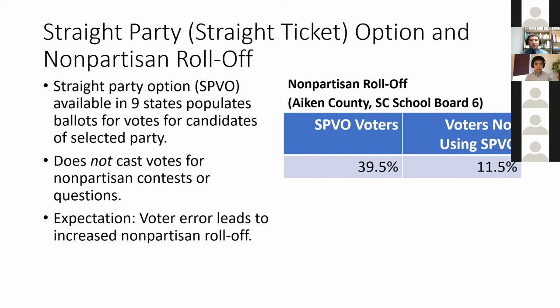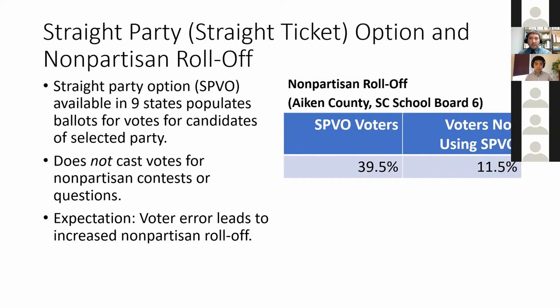We might expect therefore to find that nonpartisan roll-off and voter error are higher among straight ticket voters, and that's at least initially what we see. Using cast vote records in 2018 from the school board district I live in in Aiken County, South Carolina — a nonpartisan, intensely contested school board race — cast vote records show that of individuals who used the straight ticket option, about 40% rolled off this question and did not cast a vote for the nonpartisan school board. Among voters who went through the ballot manually and did not vote straight ticket, only about 12% rolled off.